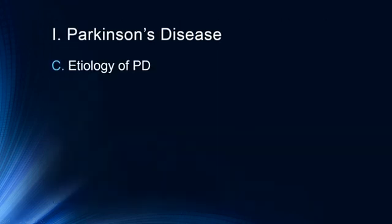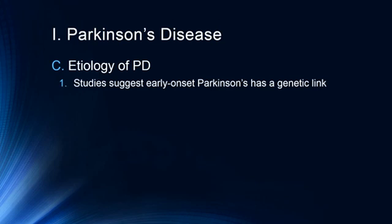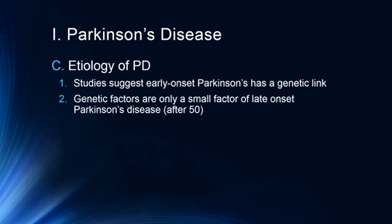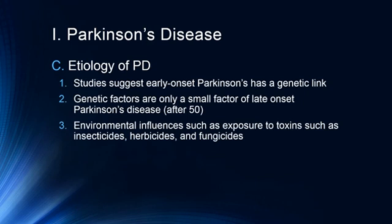The etiology of Parkinson's disease: studies suggest early onset Parkinson's has a genetic link, but genetic factors are only a small factor in late onset Parkinson's disease — if you develop it after 50, there's much lower probability it is genetic. Environmental influences such as exposure to toxins including insecticides, herbicides, and fungicides may have significant influence. Elevated Parkinson's rates are seen in farm workers often exposed to these toxic substances.